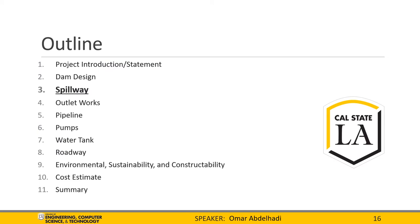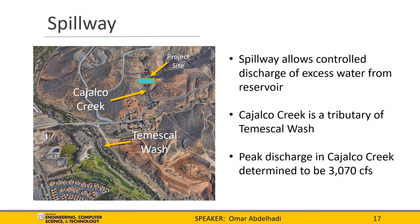Now we will be talking about the spillway. The spillway is a structure which allows water to flow out of the dam in a controlled fashion when water height exceeds a certain level. This is required when the dam is at or near capacity and a large storm raises the water level in the reservoir. The expected peak flow through the creek is 3,070 cubic feet per second, determined to be half that of the flow in Temescal Wash, for which Cahalco is a tributary. The peak flow value for Temescal Wash was taken from USGS stream gauge data. There are three main components to the spillway: the crest, channel, and stilling basin.